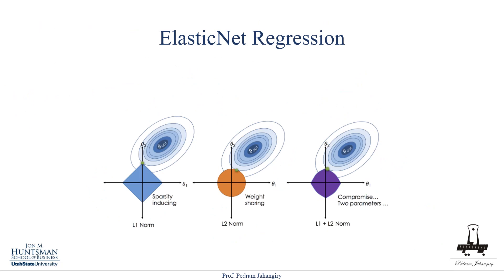Next part: elastic net regression — the last penalized regression we're going to cover.